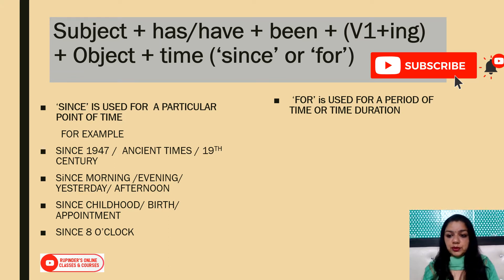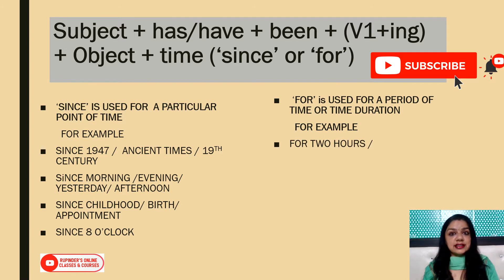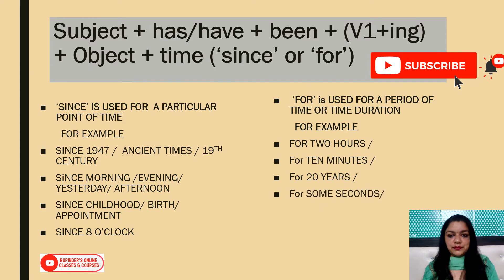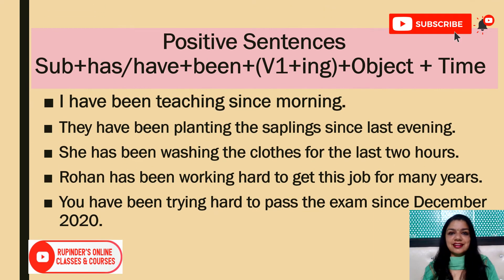'For' is used for a particular period of time or time duration. For example: for two hours — 'I have been teaching for the last two hours' — for 10 minutes, for 20 years, for some seconds, for 10 days, and so on.